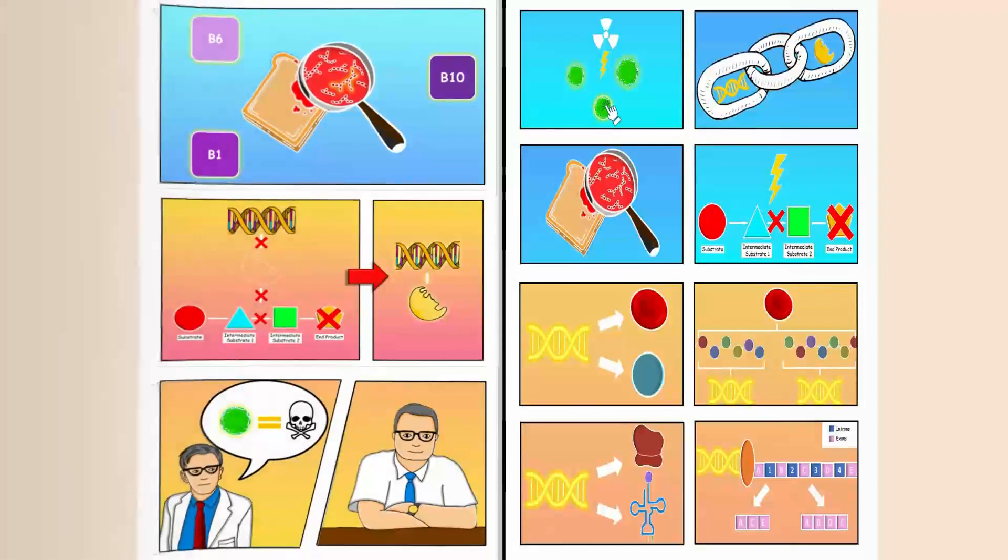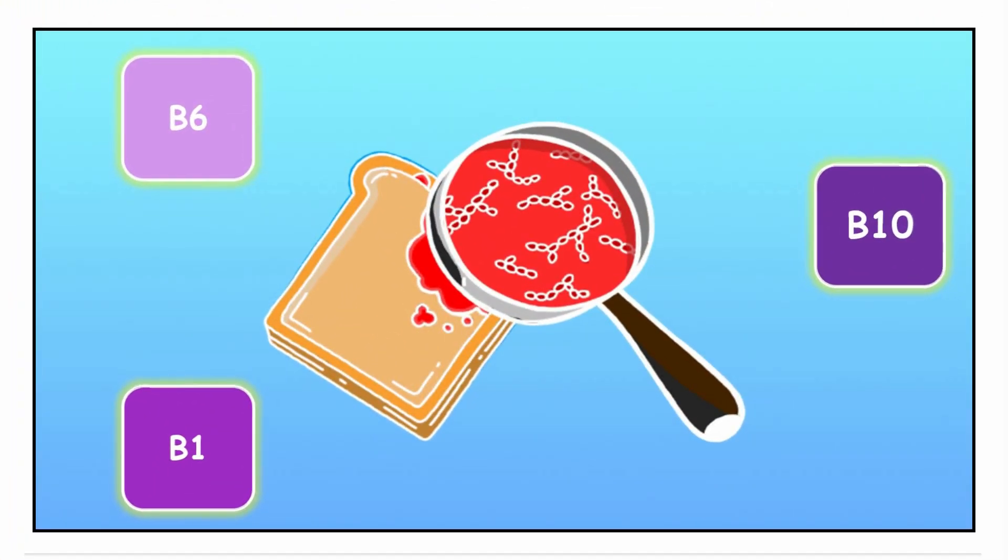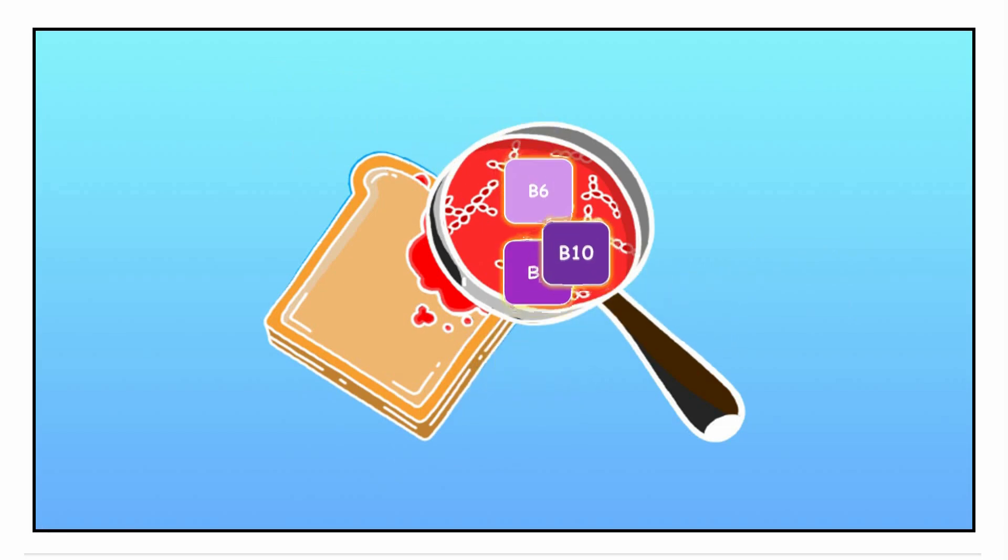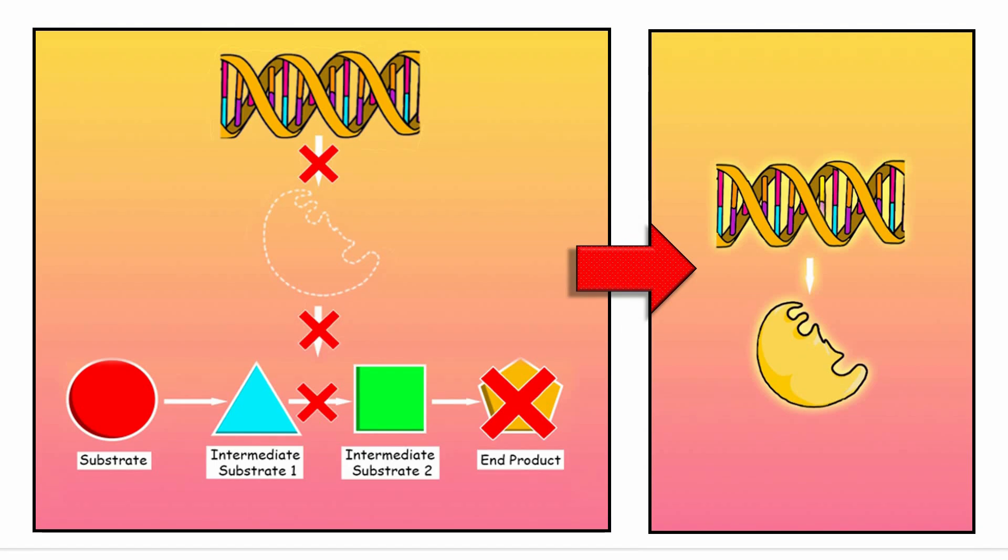It was thus made clear that these genes coded for proteins essential for the survival of Neurospora. This finding that a gene mutation causes the need for a single molecule was used as evidence for the one-gene-one-enzyme hypothesis.